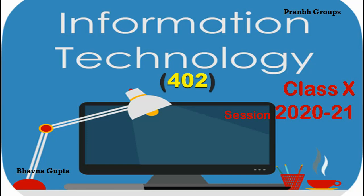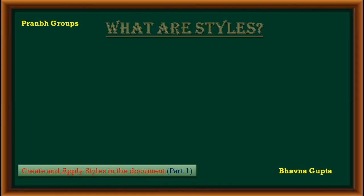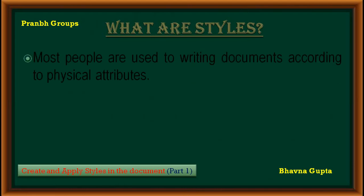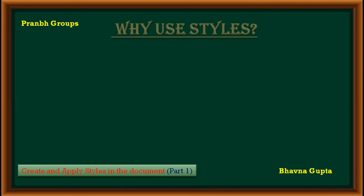Welcome back, dear friends. I am Bhavna. Let's continue this series. In this video we discuss about creating and applying styles in the document. What are styles? Styles are logical attributes. We use styles every day. Most people are used to writing documents according to physical attributes, for example specifying the font family, size, and properties — properties means bold, italic, underlined.